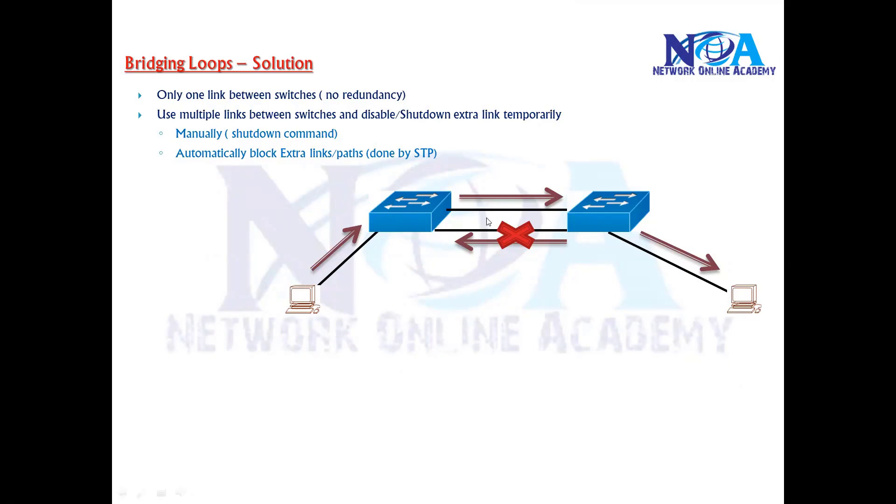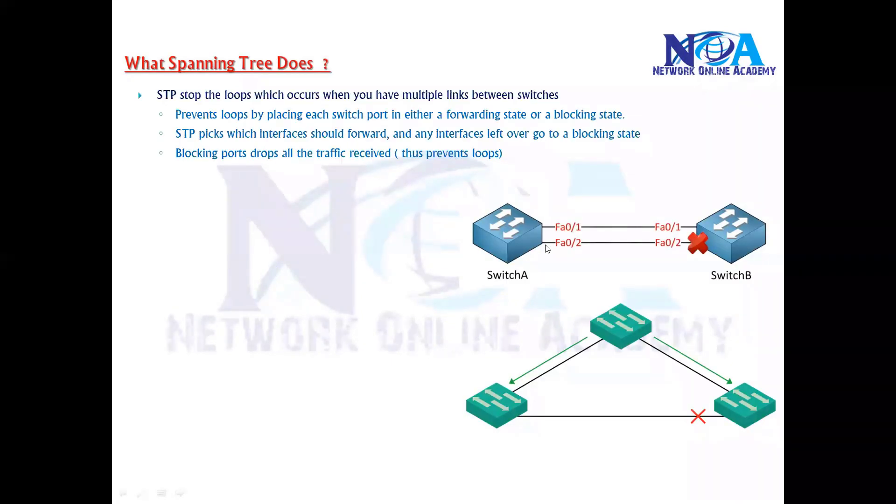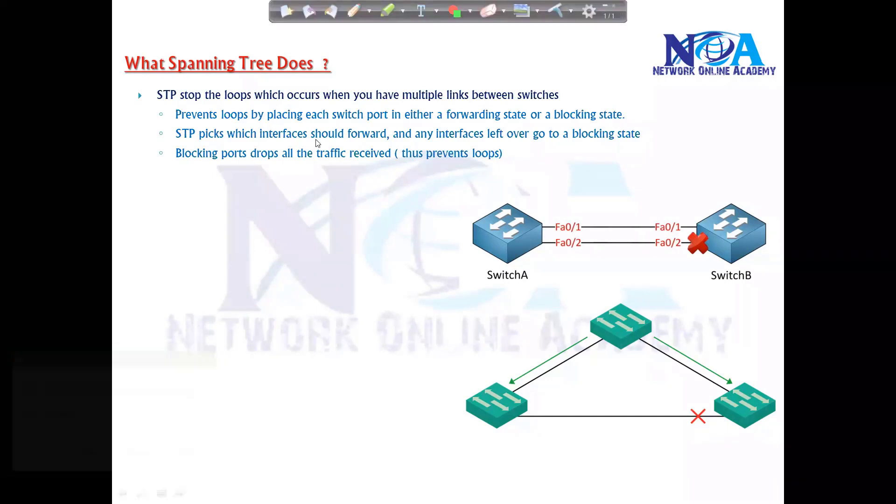At the same time we have redundancy, which means if one of the link fails, automatically the other link will be forwarding the traffic. So this is the same thing what STP does. STP is going to stop the loops, so the loops can be prevented.